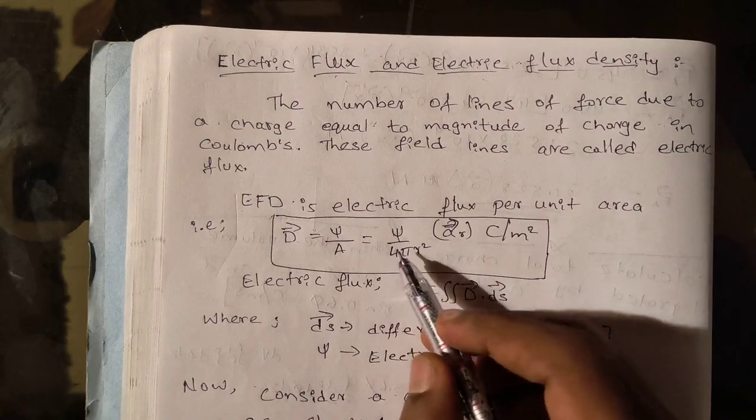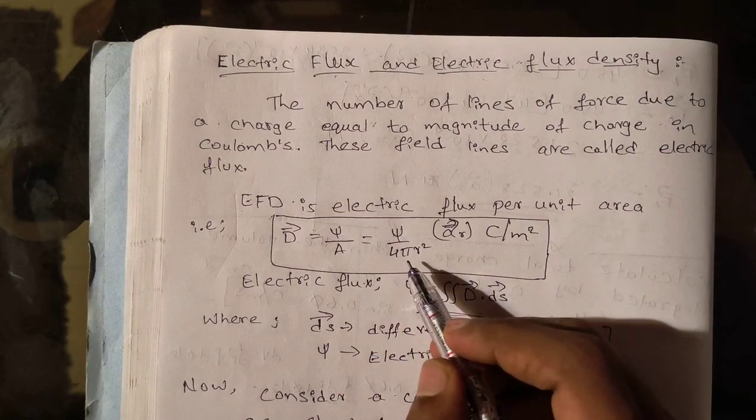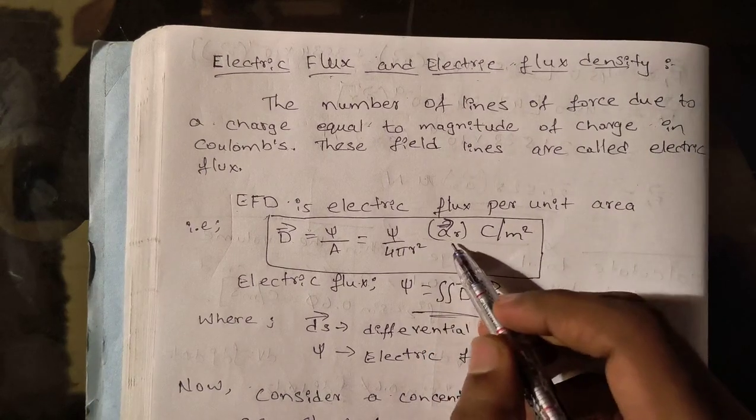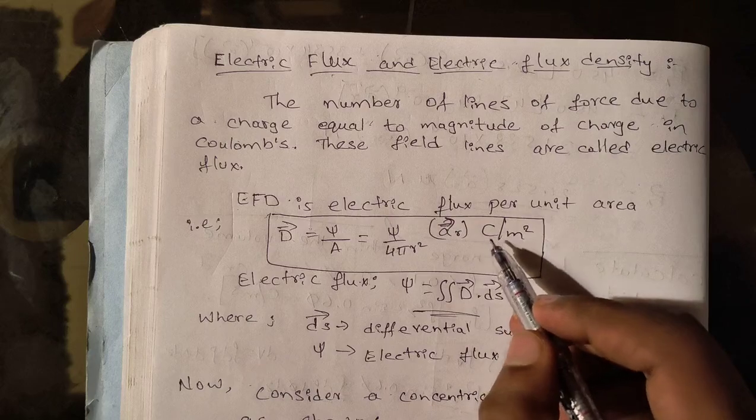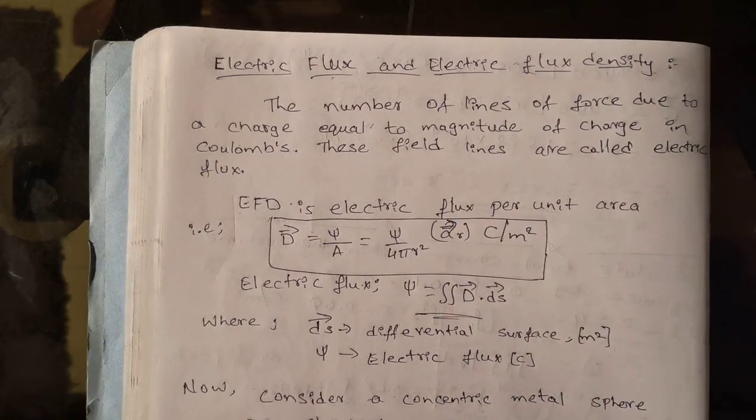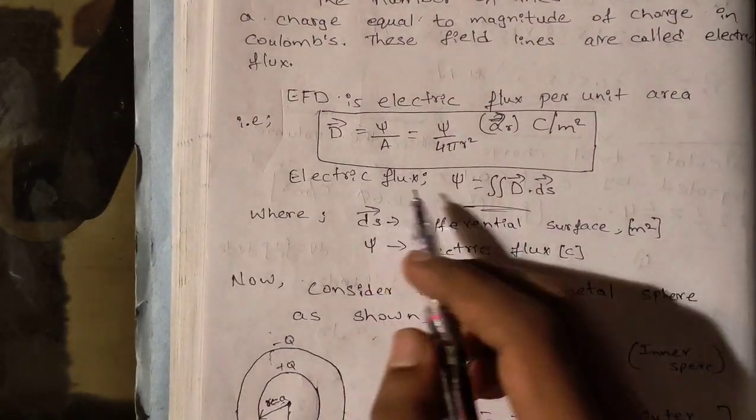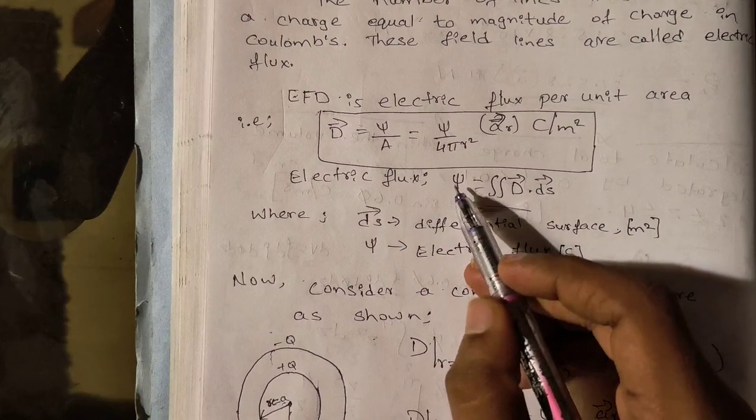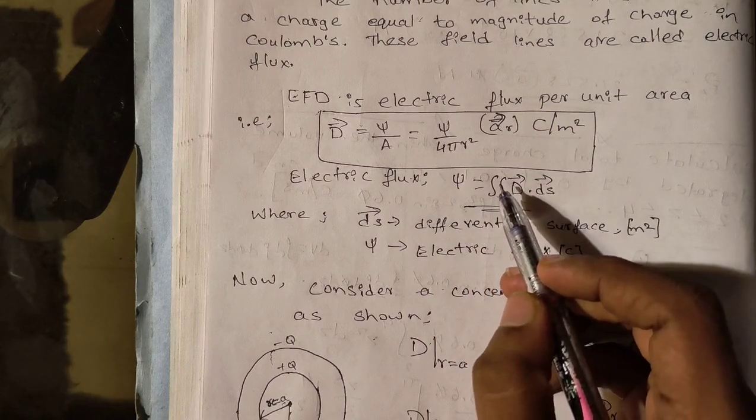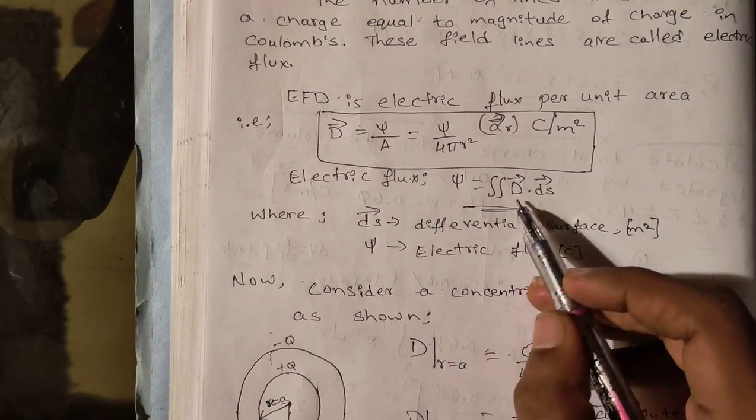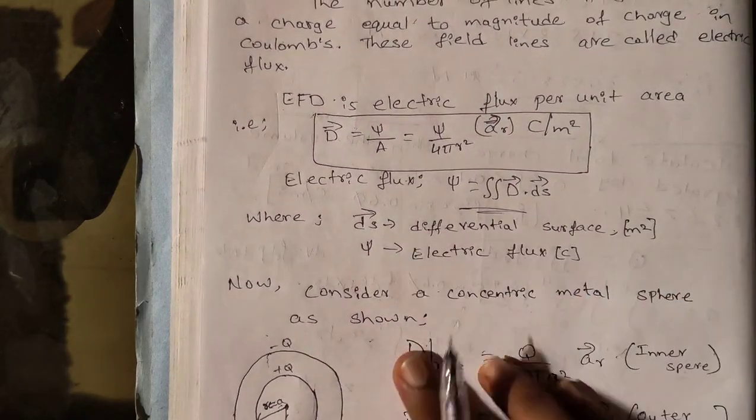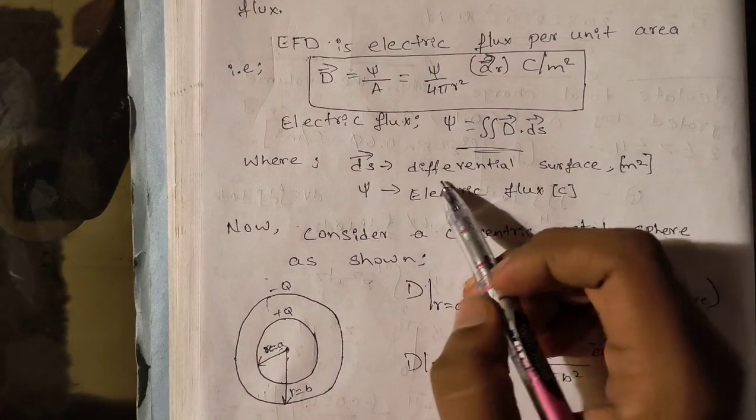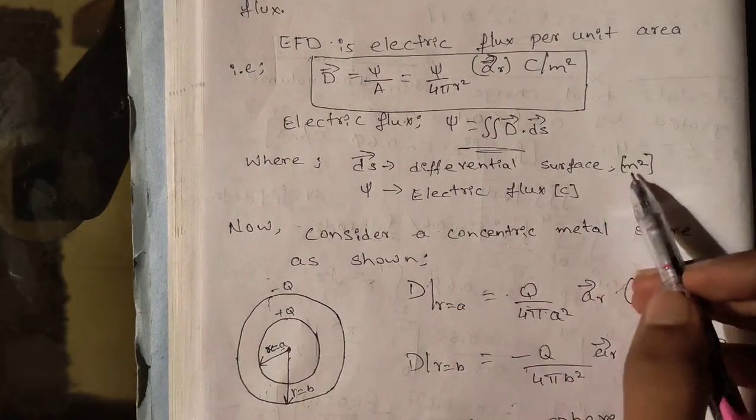Area is a variable according to the coordinate systems, which I will explain in the problem. Now it is equal to Ψ divided by 4πr² aᵣ vector. The unit is Coulombs per meter square.